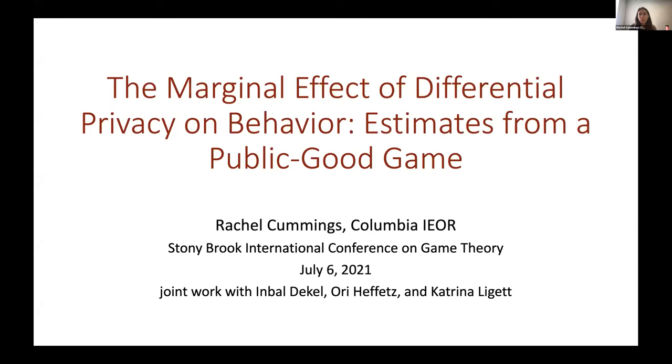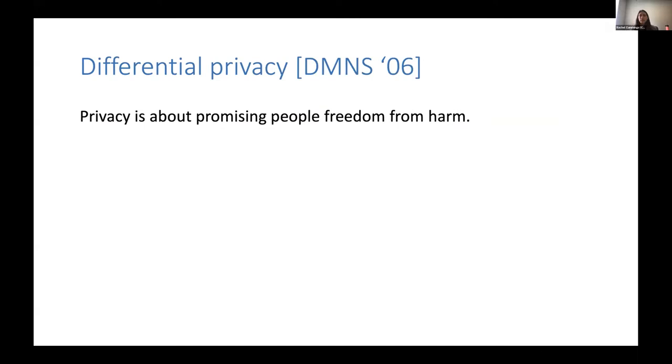And so now I will start with a brief overview of the differential privacy definition. This is not going to be an algorithmic talk, but I think it's important that we first understand what is this algorithmic technique that we're trying to understand in a broader scheme. Differential privacy was defined back in 2006 by Dwork, McSherry, Nissim, and Smith. And they said, really, privacy is going to be about promising people freedom from harm. No harm is going to come to you because you shared your data with some analysis process.